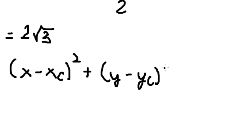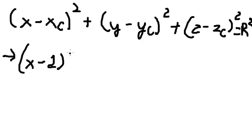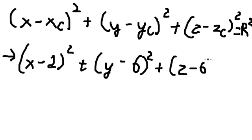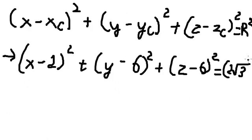Now after we have everything, we put it in the sphere equation formula: (x - xc)² + (y - yc)² + (z - zc)² = R². So (x - 2)² + (y - 6)² + (z - 6)² = (2√3)² = 12. This is the final answer.